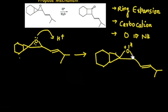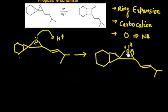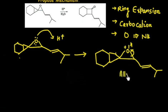Now I have two options — I can break the cyclopropane ring from this side or from this side. If I break from this side, I will have an allylic carbocation here, which is resonance-stabilized. But if I break from the other side, that carbocation is not stabilized — it is a strained carbocation. So the allylic carbocation is the better option.